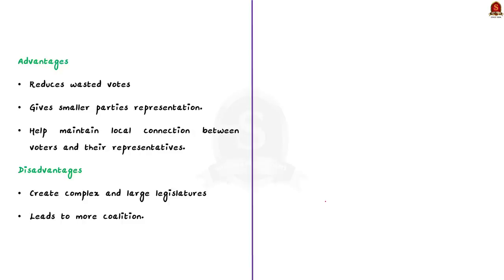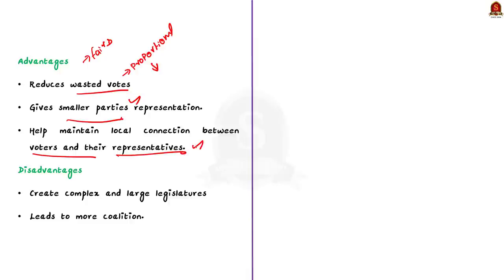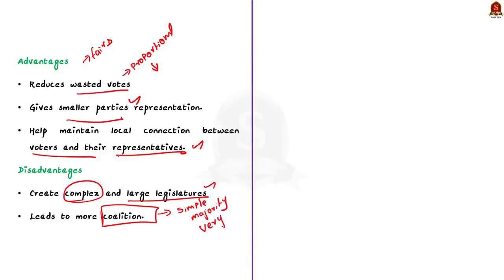Now let us see the advantages of this system. This system is considered to be fair and proportional because it reduces wasted votes and provides even smaller parties with representation in the national legislature. It also maintains a local connection between voters and their representatives. Critics argue that this system can create a complex and large legislature and may lead to more coalition governments, since a single party rarely wins an outright majority. A coalition government tends to be slow in its operation — this is the major disadvantage.